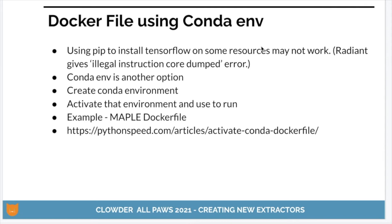Most of the examples we've seen use pip to handle all dependencies — pip is probably the most common way people install things using Python. However, there are occasionally cases where that's not the best option. If you try to use pip to install TensorFlow on some resources like Radiant, you'll possibly get an illegal instruction core dump error when you try to import TensorFlow. Another option is to use a conda environment, but there's a trick involved in making sure that when you're actually running the extractor, you're using the correct Python — because if you don't do it correctly, you'll create a conda environment and activate it, but then when you go to run Python, you'll be running whatever the default Python is that doesn't have those dependencies. Let's take a look at a Dockerfile that uses conda instead of pip.